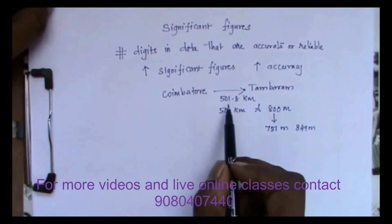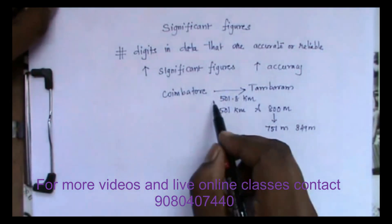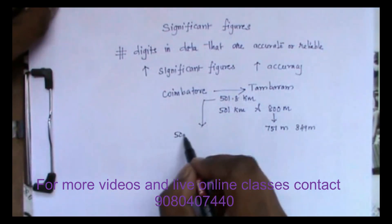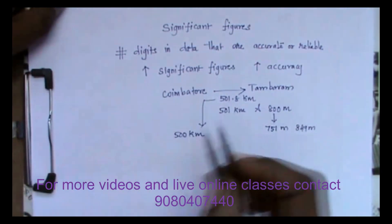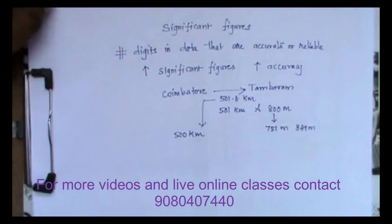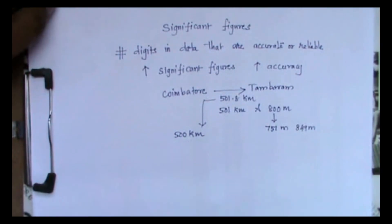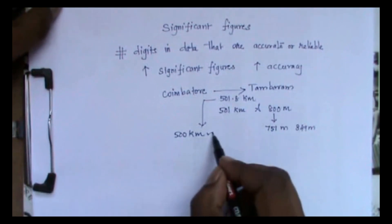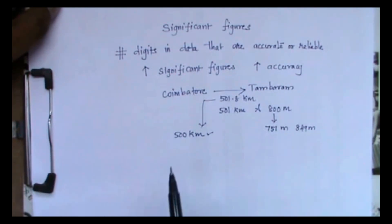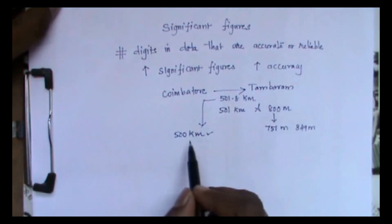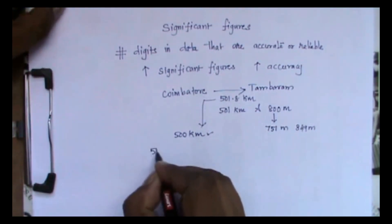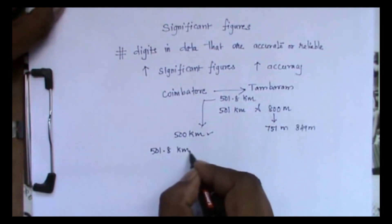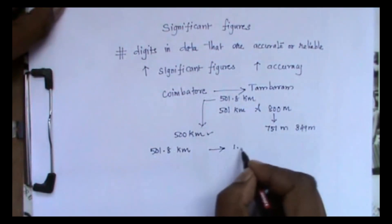Generally since it is very close to 500, we can consider this as 500 kilometers distance. We need not bother about the meters. This is more accurate compared to the previous value and still acceptable for calculations because the error percentage will be very less. The difference between the actual value 501.8 km and 500 km is only 1.8 km.